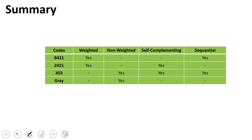To summarize: gray code is a non-weighted code, sequential (cyclic), and varies by one digit. 2421 is a weighted code and self-complementing code. XS3 is a non-weighted code, self-complementing, and also sequential. Gray code is non-weighted and sequential. This summary table will help you answer MCQ questions such as 'which of the following is a weighted code' or 'which is a self-complementing code.'